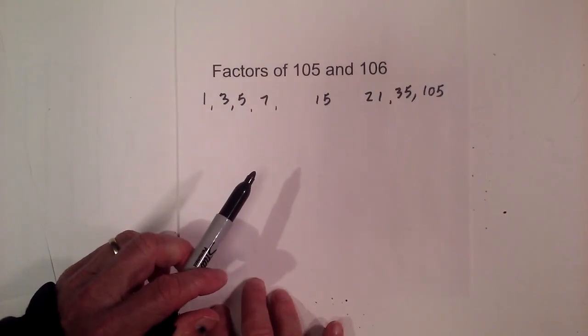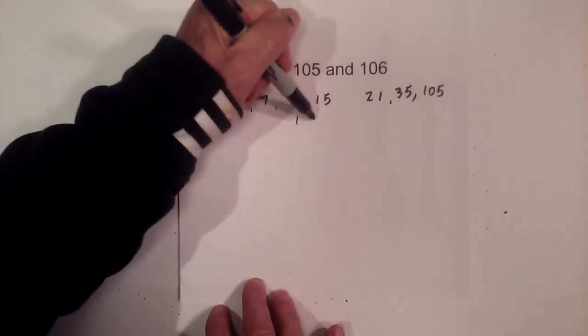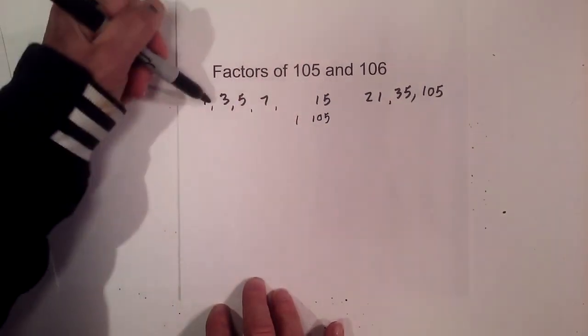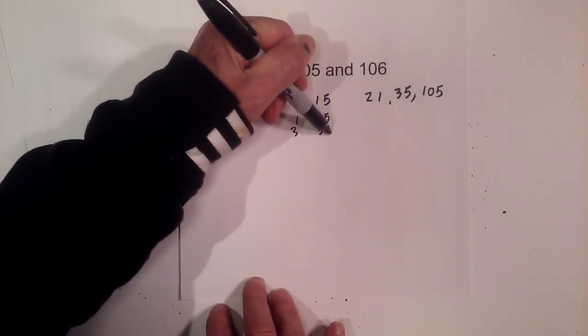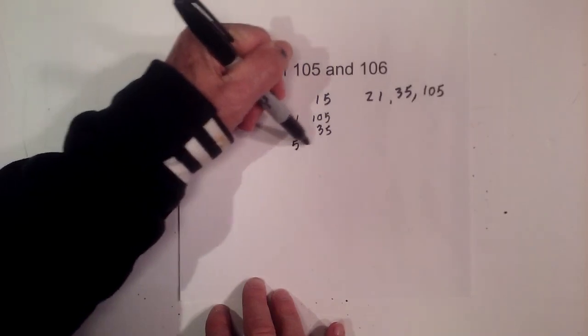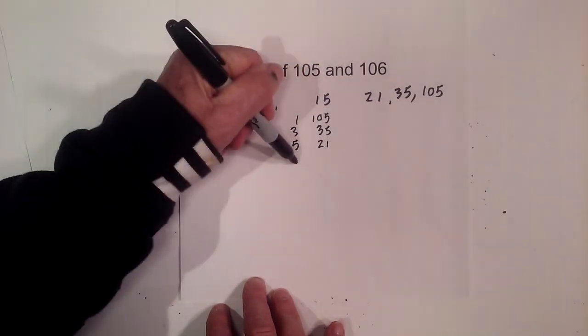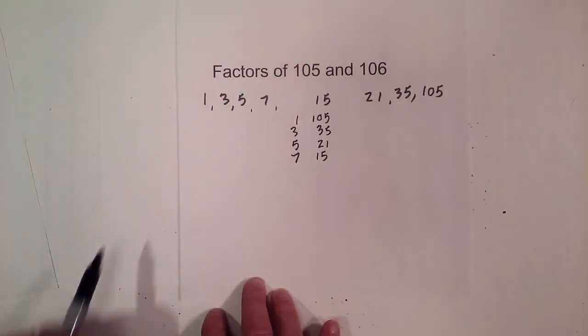If you'd like to see them in pairs, it's 1 times 105, it looks like 3 times 35, 5 times 21, 7 times 15.